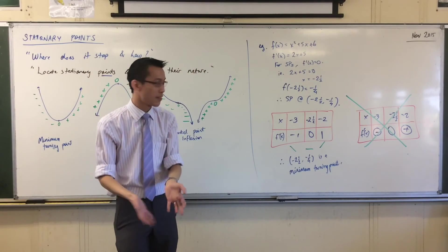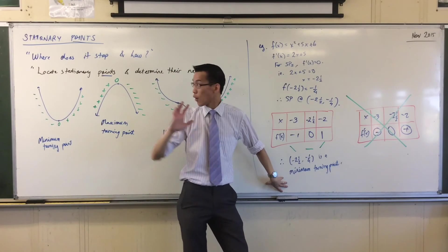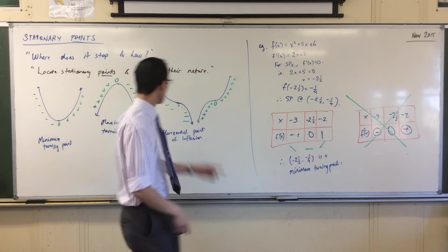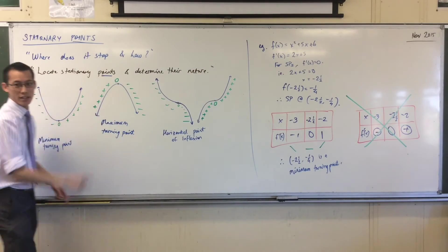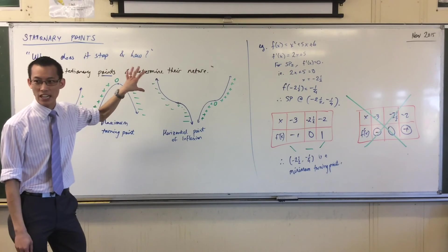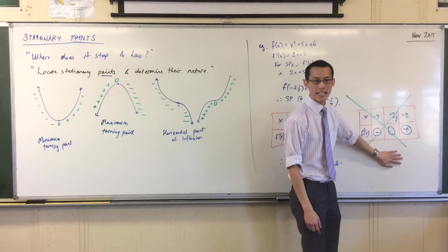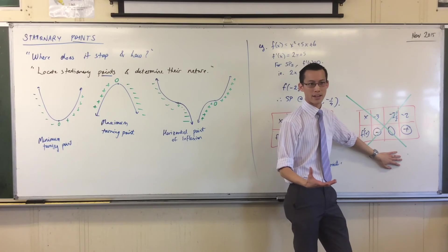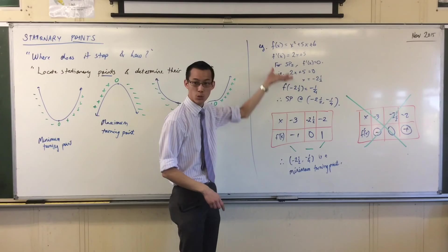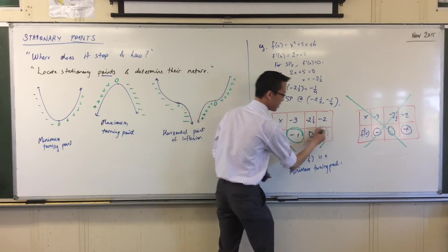And you can just read that off the question. The question might even say locate the stationary points and prove that blah blah blah is a minimum turning point. So the question already tells you this is what's coming. Now by doing this, what have I demonstrated? What understanding have I demonstrated? And the answer is none. I showed I could read the question, but I haven't actually been able to work with it.